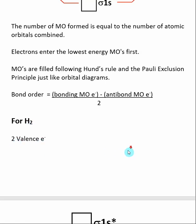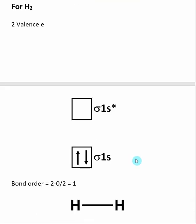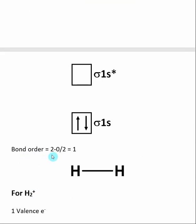For H2, each hydrogen has one valence electron. When they form a molecule, they form two molecular orbitals, and we place the two valence electrons inside. The sigma 1s bonding molecular orbital is filled first. The bond order is: two electrons in bonding molecular orbitals minus zero electrons in antibonding molecular orbitals, divided by two — giving a bond order of one. This matches the Lewis structure of H2, where each hydrogen is connected by a single bond.